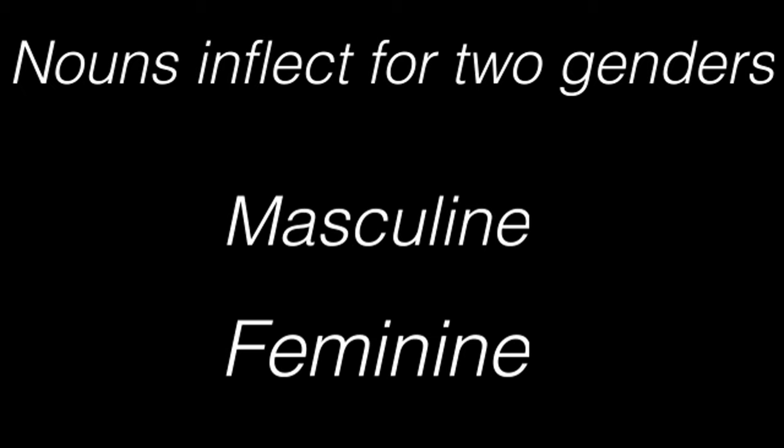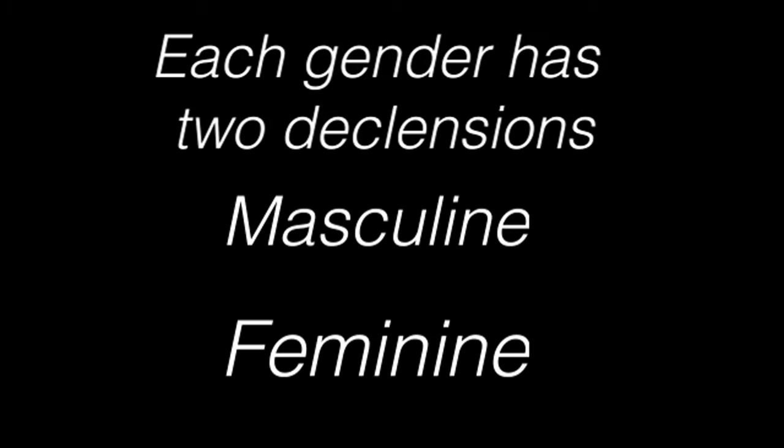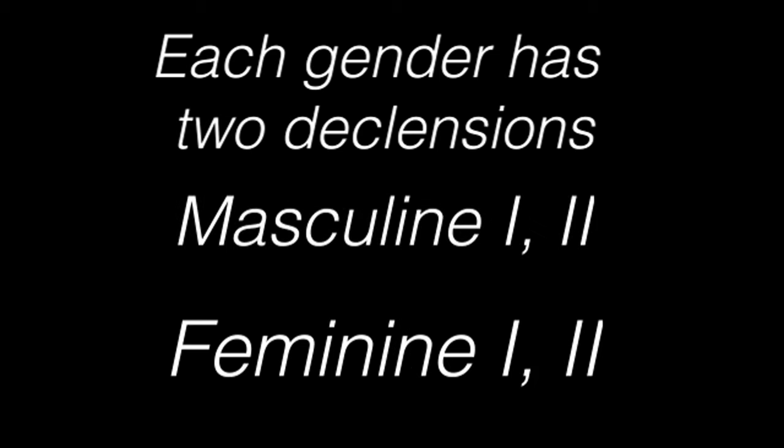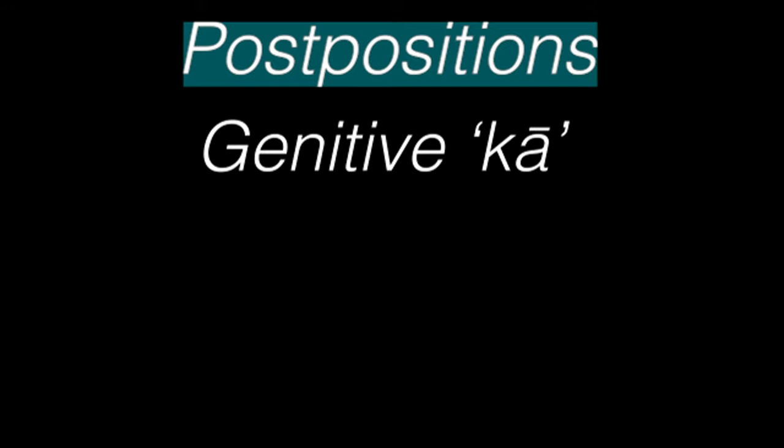So what's Hindustani's grammar like? Let's begin with nouns. Nouns inflect for two genders, masculine and feminine. They're further split into two declensions — masculine one and masculine two, as well as feminine one and feminine two. They also inflect for three cases, but more on those later. Nouns also take postpositions. For example, the genitive marker ka, as in larke ka seb, meaning the boy's apple.